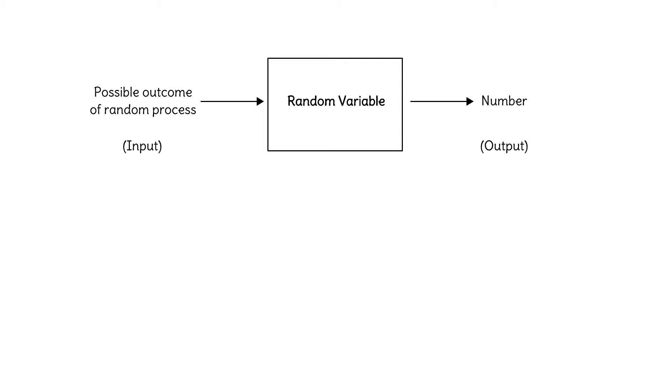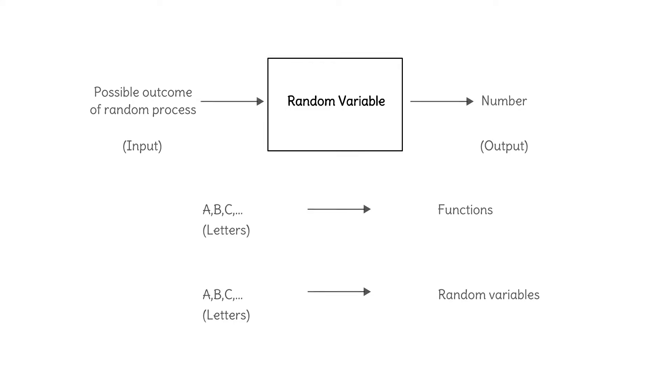Anyone can create one. We use letters to represent functions, and in the same way we will use letters to represent random variables. For example, we can represent this random variable with the letter C for color.